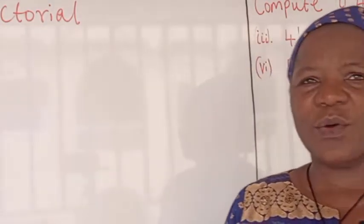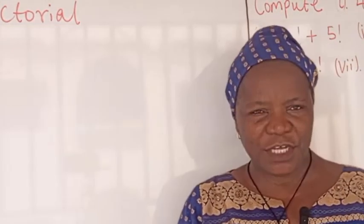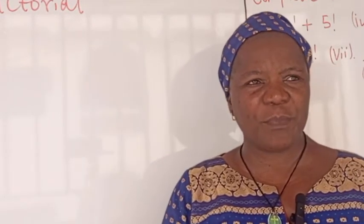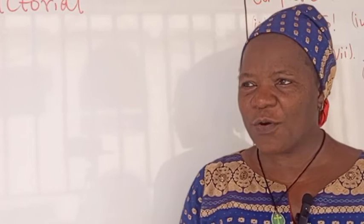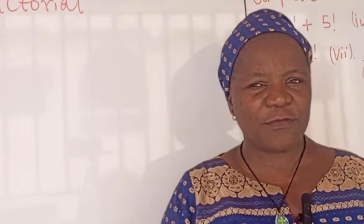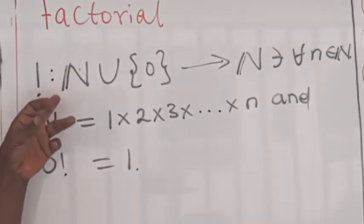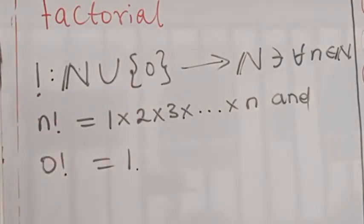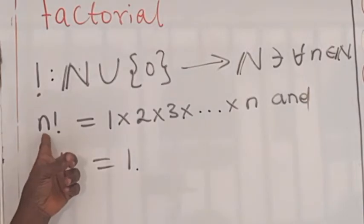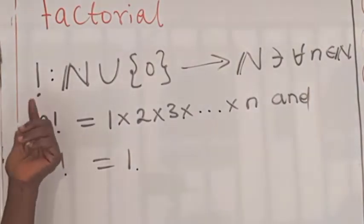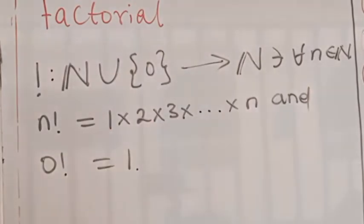Today we are going to study permutation. For us to understand the concept of permutation, we have to first recall the concept of factorial. Factorial is a function whose domain is the set of natural numbers union the singleton set containing zero, and the co-domain is the natural numbers. For any natural number n given to it, n factorial gives you the product of the first n consecutive natural numbers.